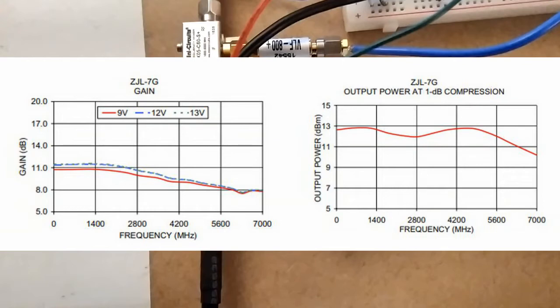So we also see on the other graph the output power at 1dB compression. This just means that the output power can't exceed this value. It'll just stay at a maximum of whatever this value is. So for our 2.5GHz, that corresponds roughly to 12dBm.